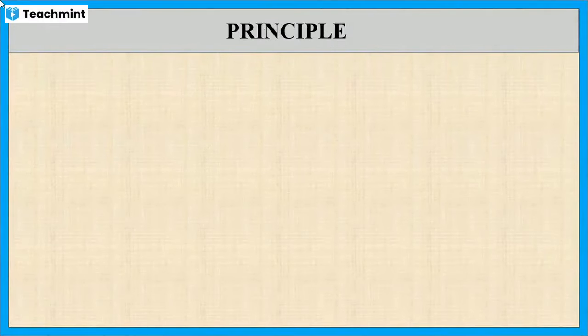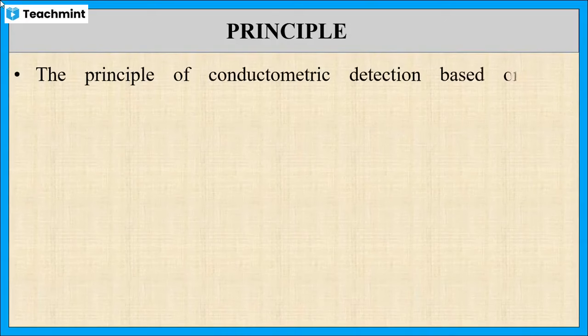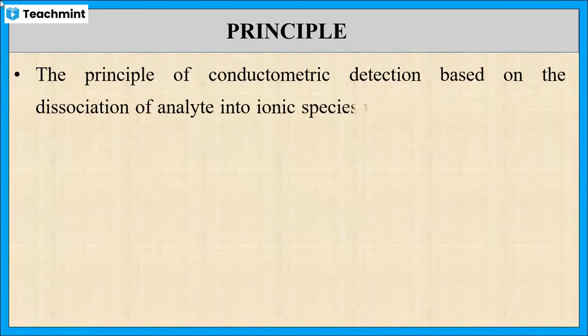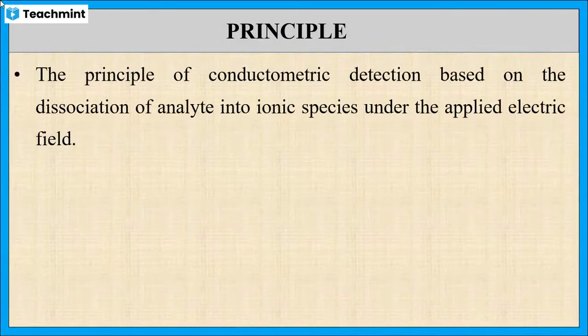Now let us see the principle of conductometric sensors. When an electric field is applied to the conductivity cell, there is dissociation of the analyte into ionic species.